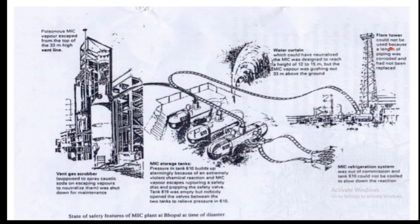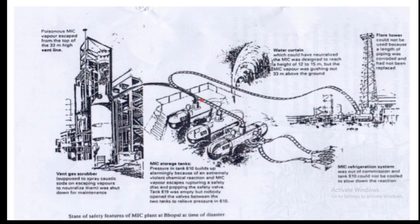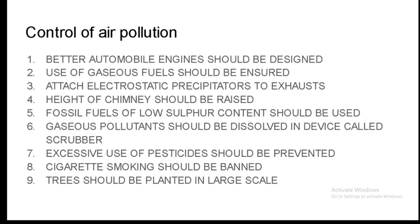The flare tower present in the Union Carbide company was not working at all. The scrubber was also not working, and the refrigeration system was also not working. You can see the outline of the factory. This was the Bhopal gas tragedy incident. Now let us discuss methods to control air pollution.